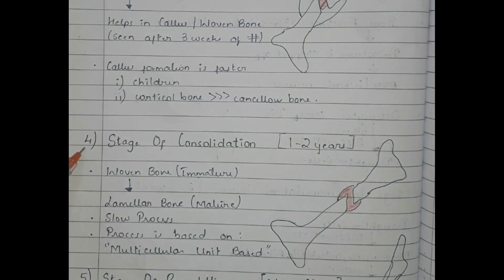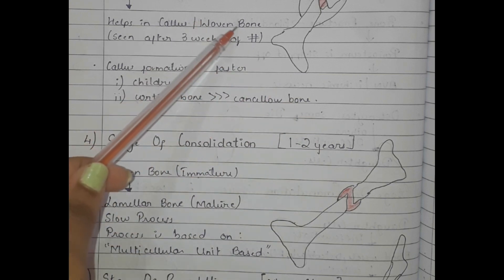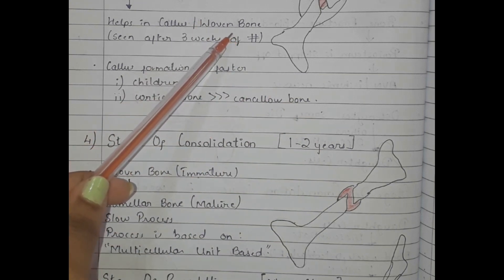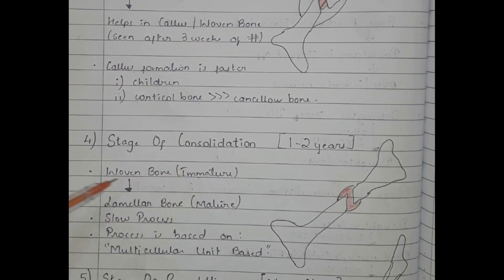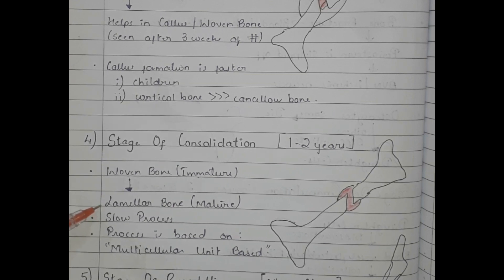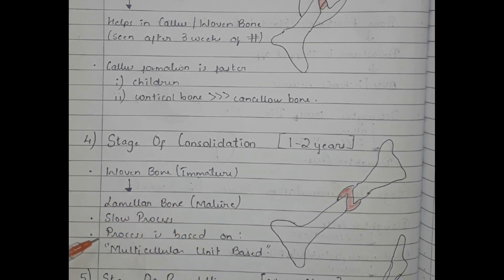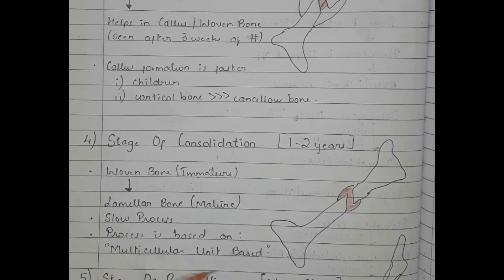The stage of consolidation lasts about one to two years. The woven bone, also called immature bone, formed in the previous stage is converted into lamellar bone, also called mature bone. This is a slow process based on the multicellular unit.